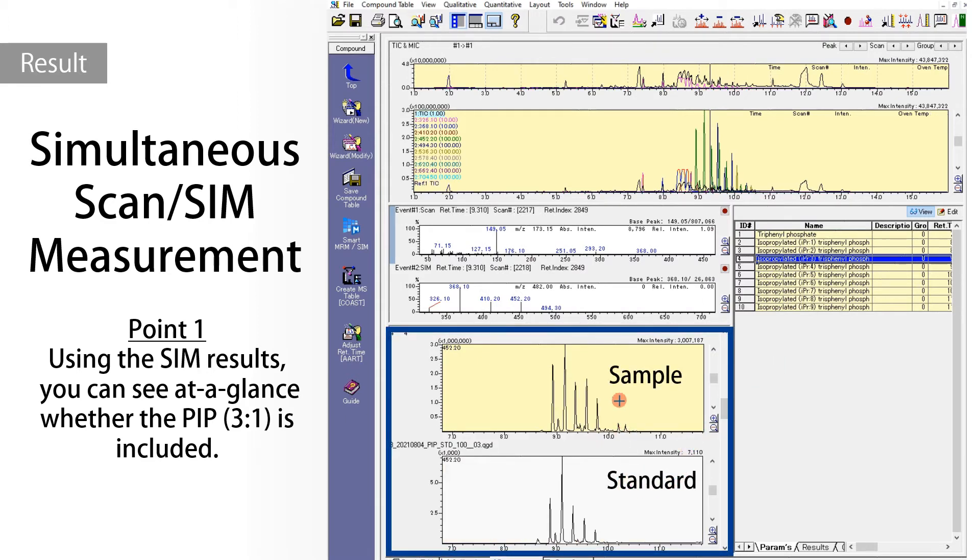You can see whether the PIP-3-1 is included or not at a glance. Moreover, simultaneous scan-SIM measurement enables qualitative analysis of unknown compounds other than PIP-3-1.